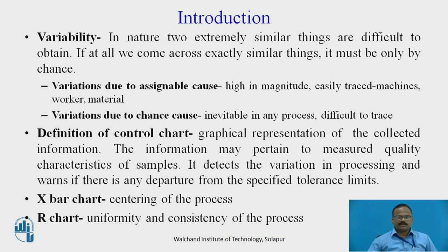A control chart is a graphical representation of collected information. The information may pertain to measuring quality characteristics of samples. It detects variation in processing and warns if there is any departure from the specified tolerance limit. There are different types of quality characteristics — for example, technological characteristics such as length, diameter, thickness, viscosity, frequency, pressure, temperature, and strength of the material. These quality characteristics can be plotted by means of a control chart.